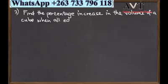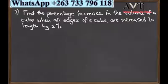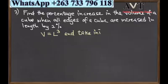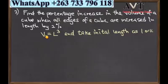In the second example, find the percentage increase in the volume of a cube when edges of a cube are increased by 2%. Here we are not given the initial value, we use initial value as 1. The volume of a cube is length to the power 3.